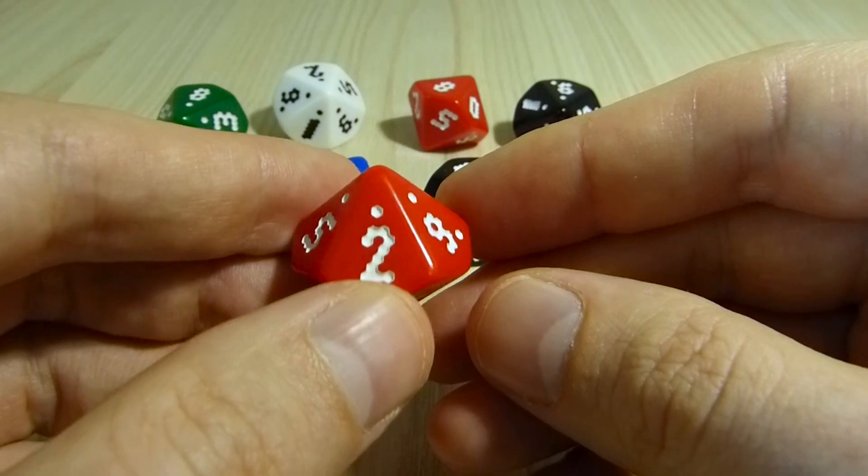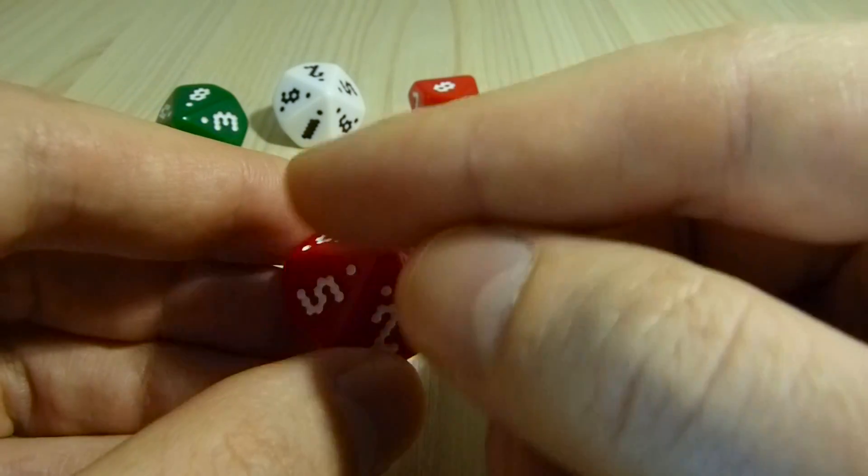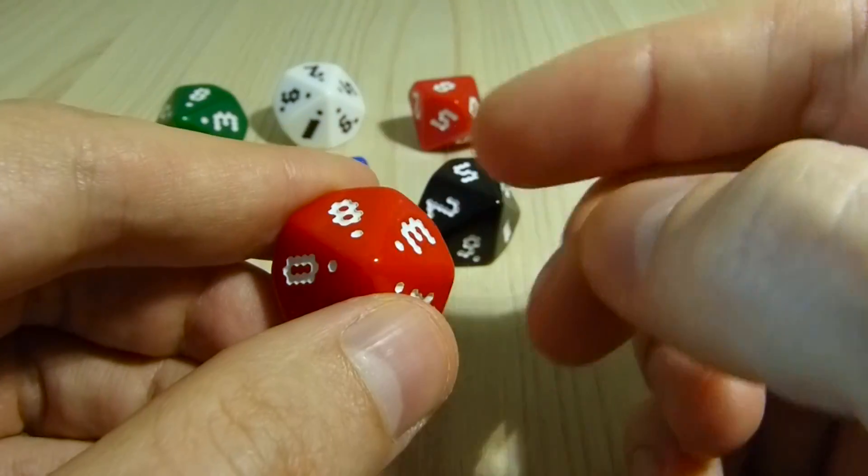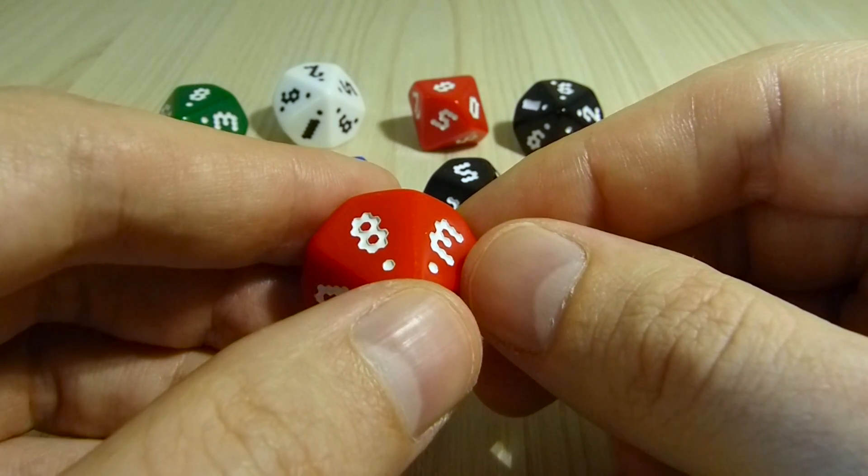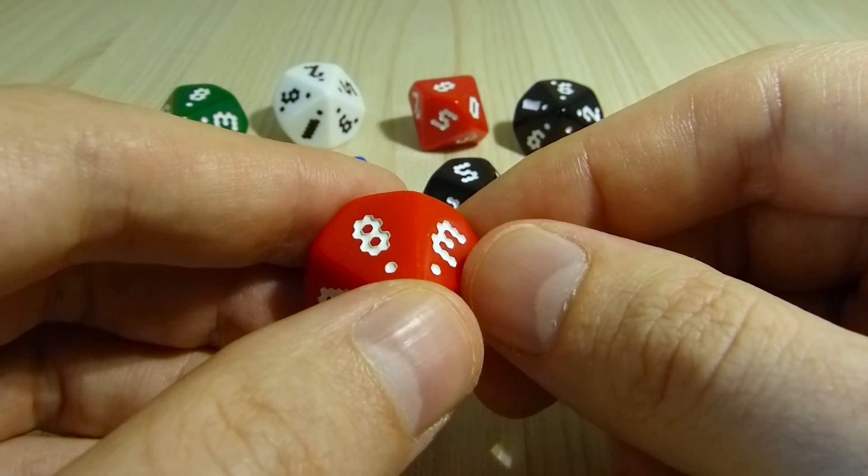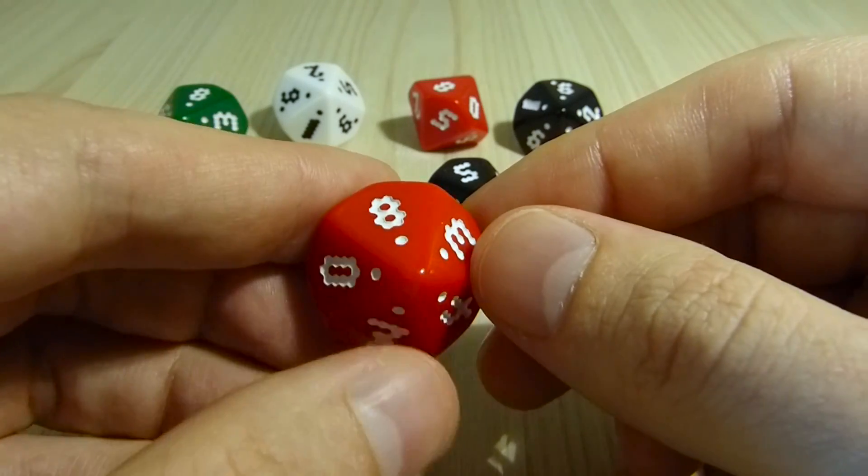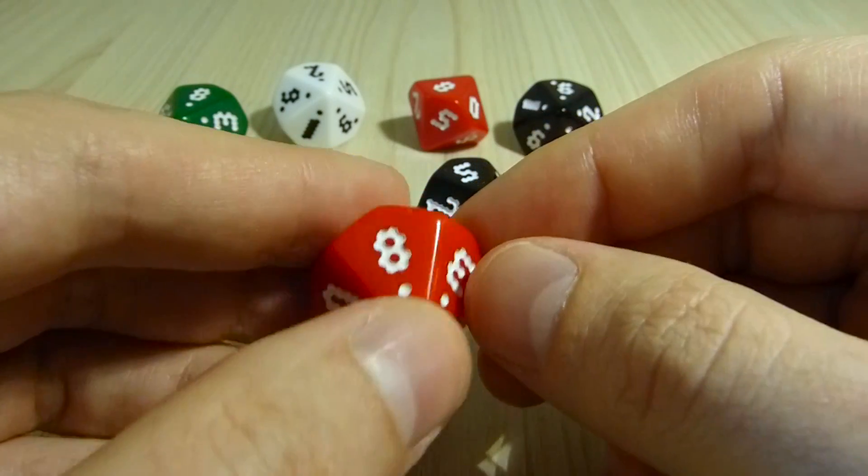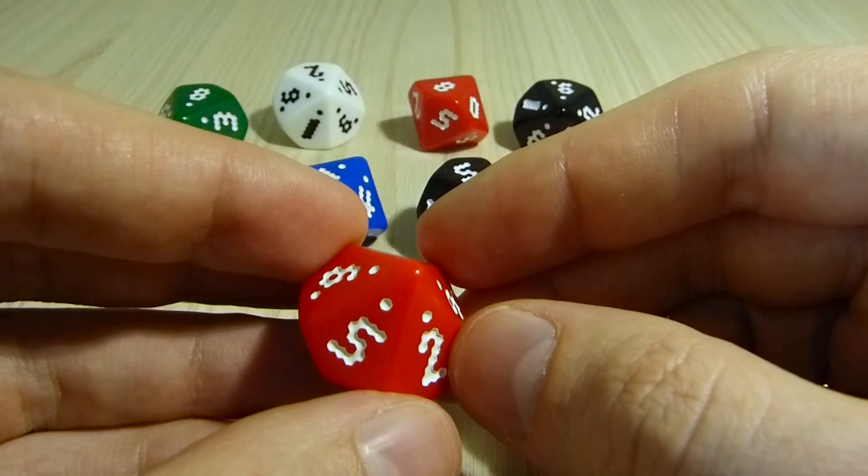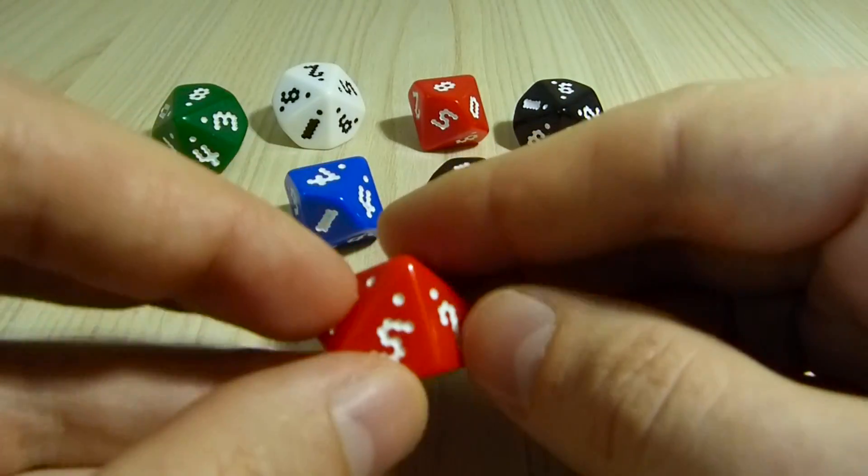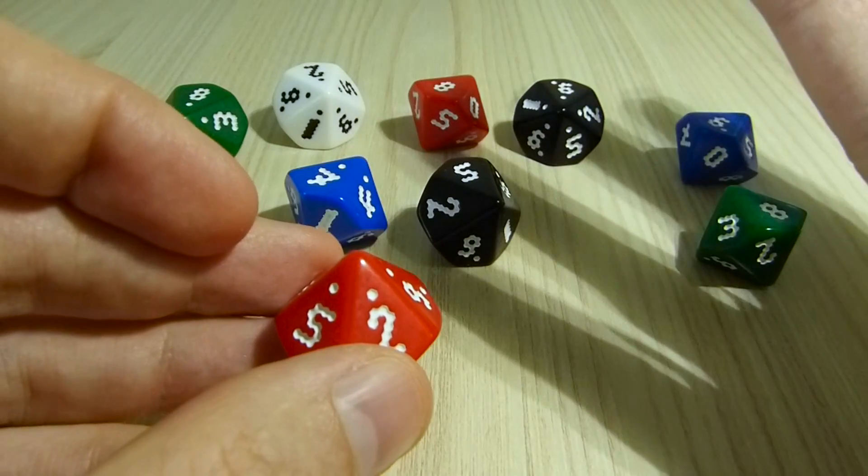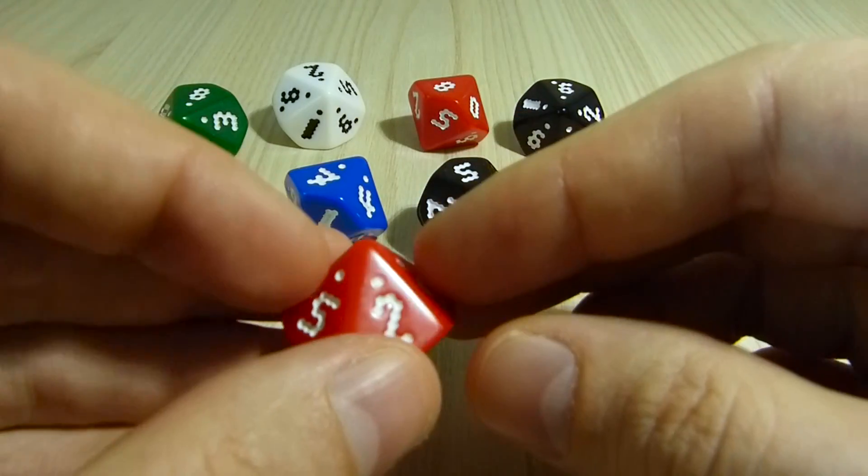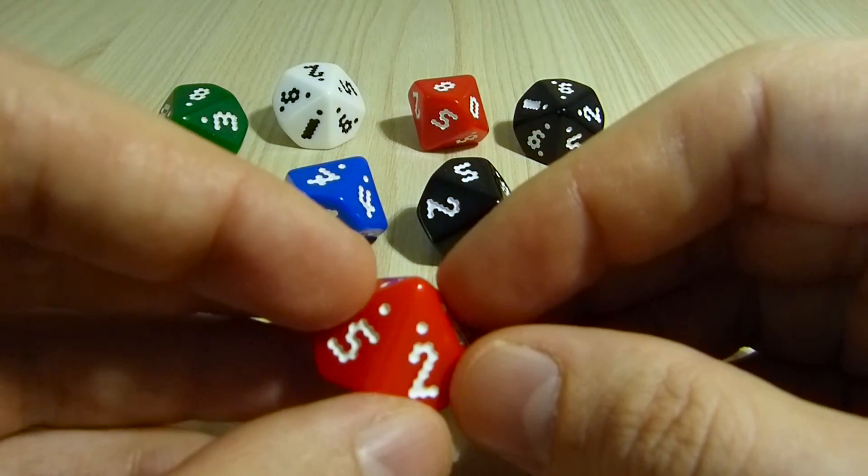Most ten-sided die have all of the even numbers on one side and all of the odd numbers on the other side. Since you're starting from zero, the odd numbers are all one more than an even number. It means that the sum total of the odd numbers is five more than the even numbers. So if you could somehow arrange it so that you were going to land on the even side, then you will be more likely to be rolling low than if you arranged it to be rolling on the odd side.